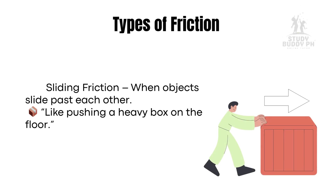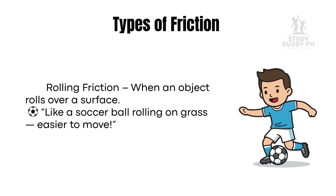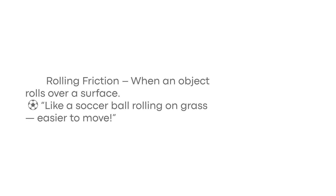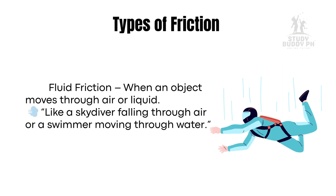Two — sliding friction: when objects slide past each other, like pushing a heavy box on the floor. Three — rolling friction: when an object rolls over a surface, like a soccer ball rolling on grass — easier to move. Four — fluid friction: when an object moves through air or liquid, like a skydiver falling through air or a swimmer moving through water.